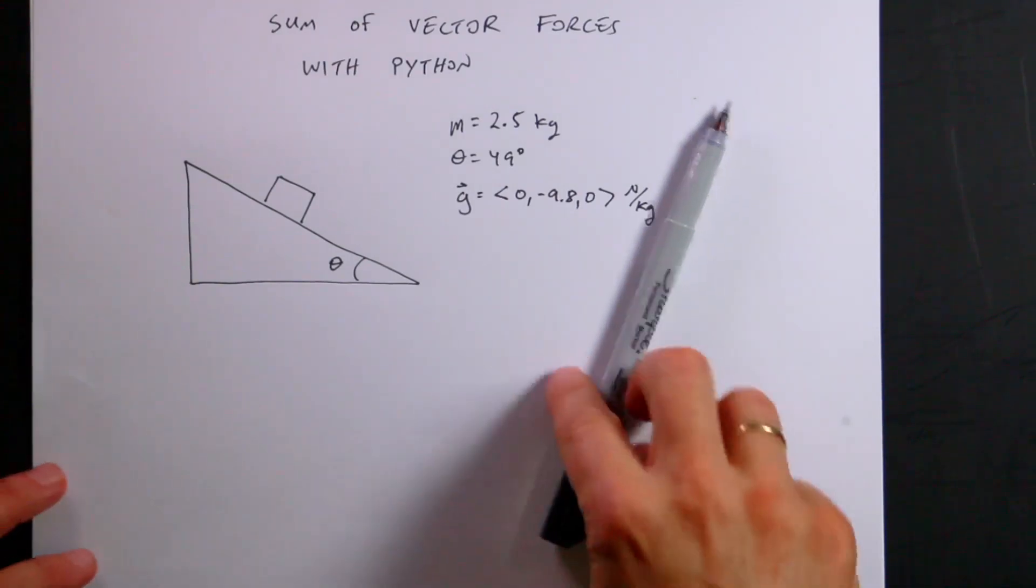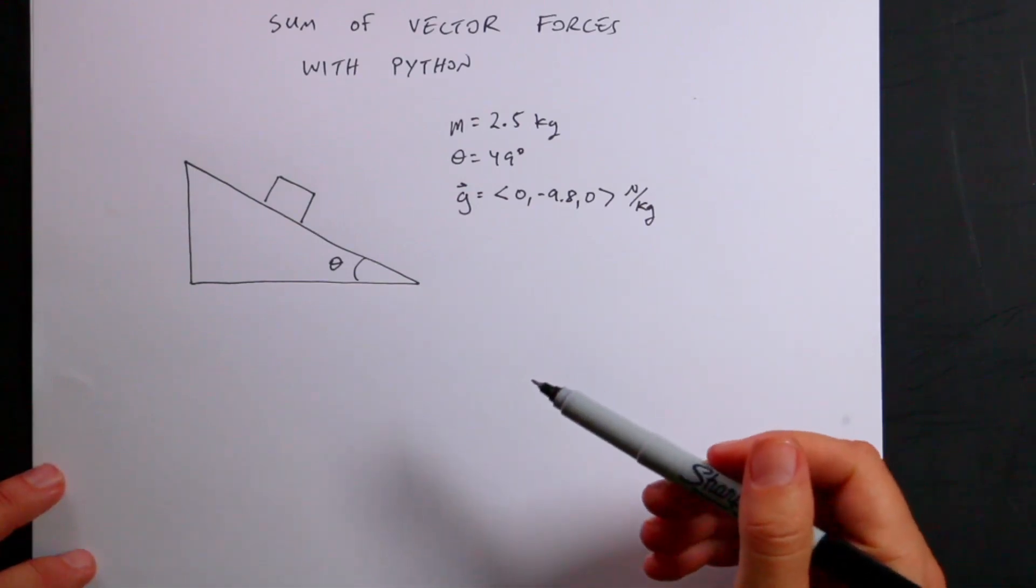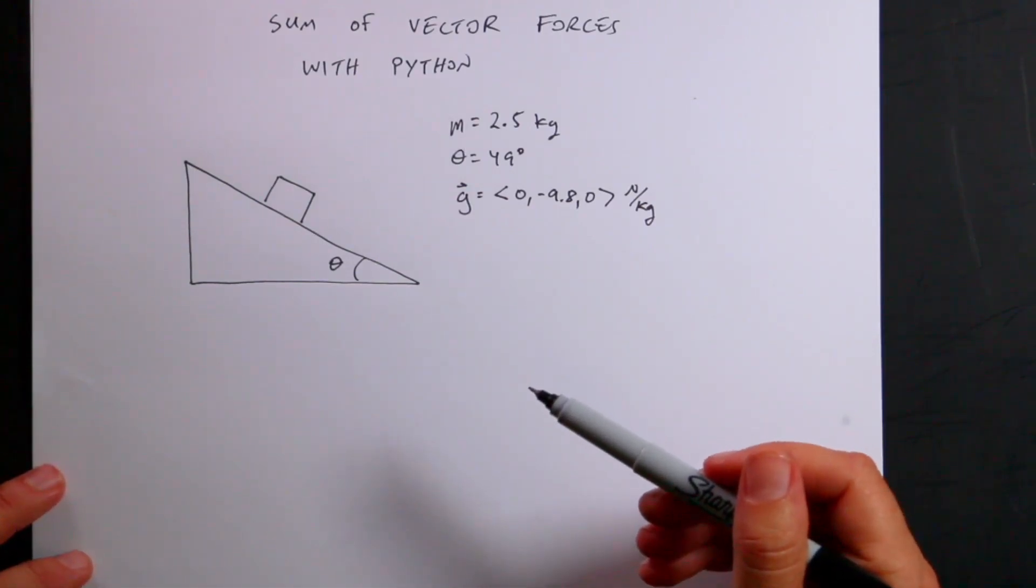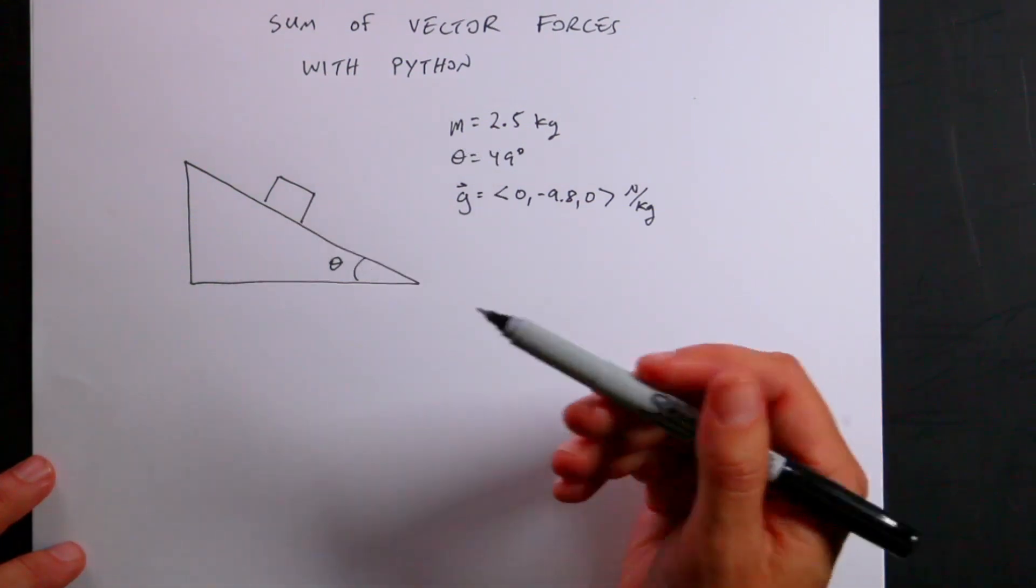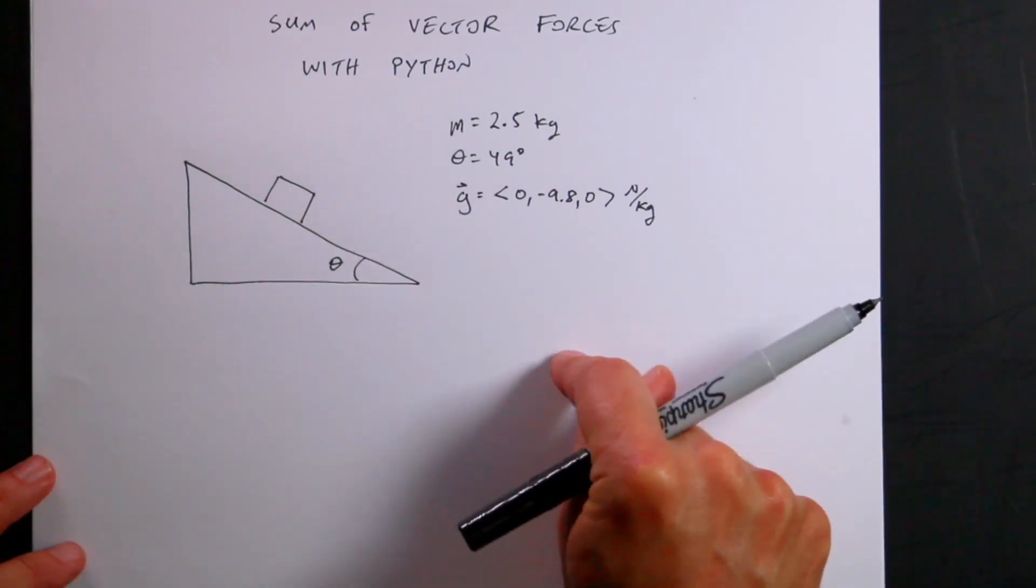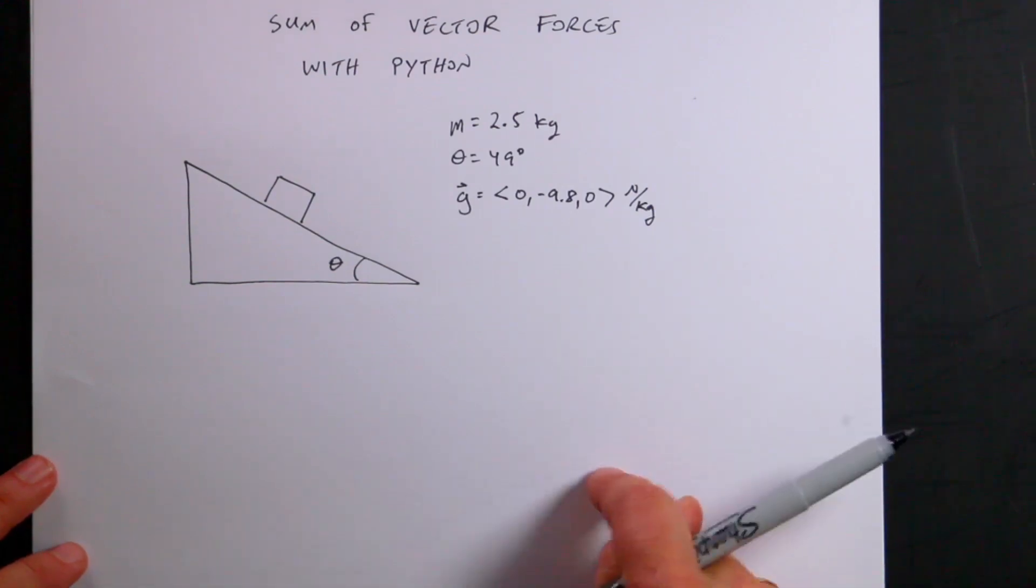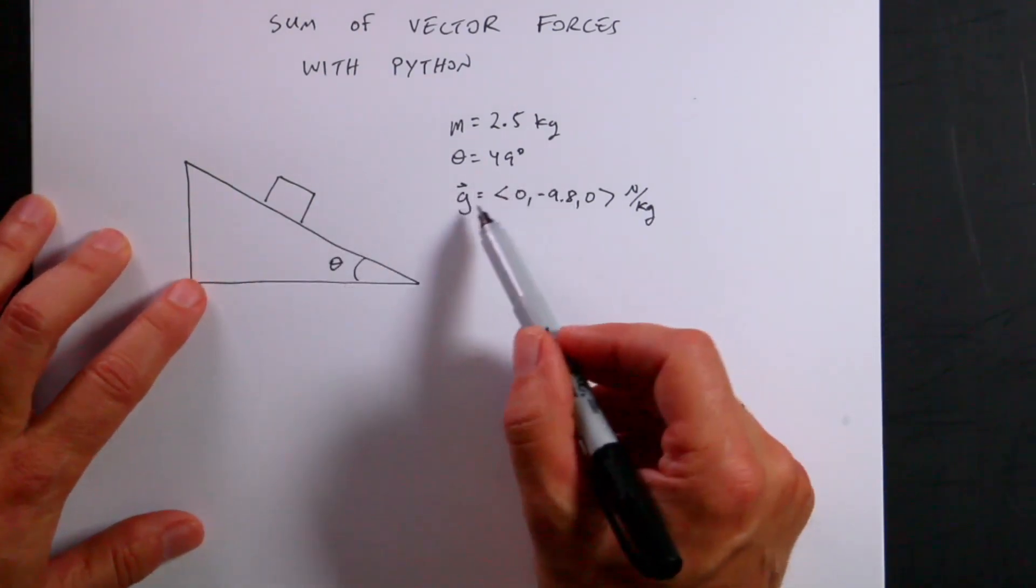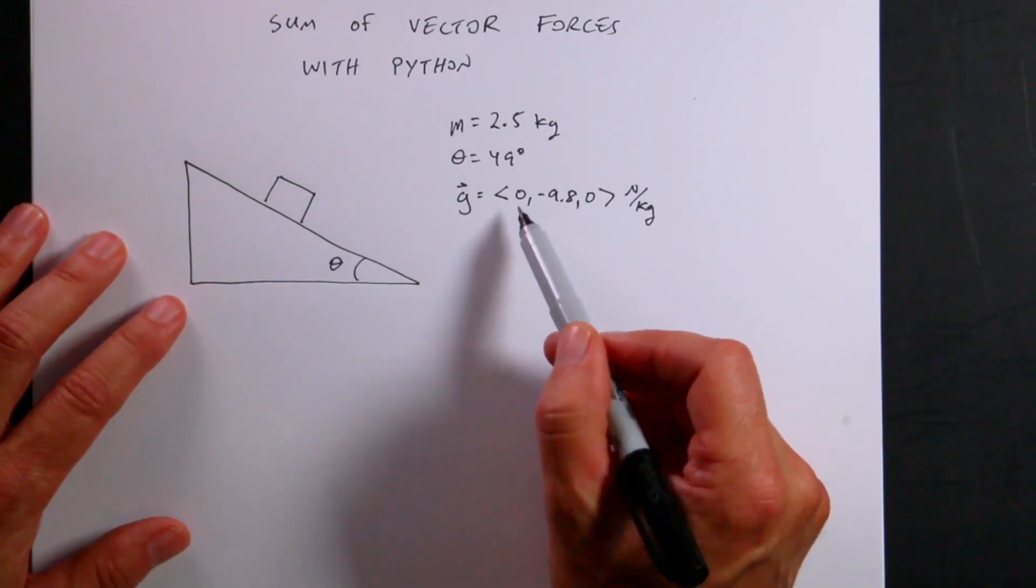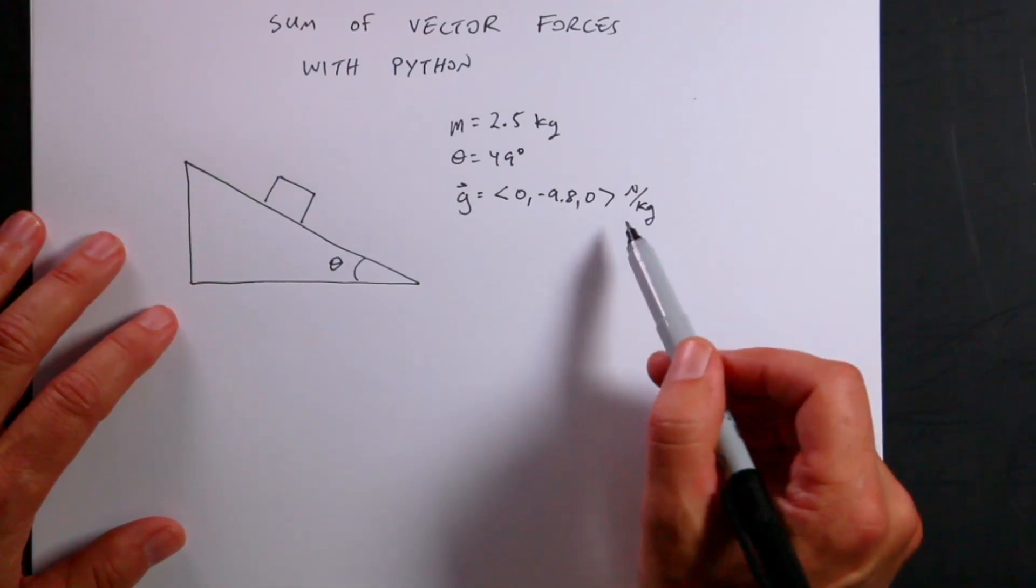Let's do some fun physics stuff. I want to do vector sum of forces and show you how to do this for this problem, a block on an inclined plane. And then we're going to do it in Python too, so I can show you the power of using Python as a calculator, especially as a vector calculator. Python's your friend. Python is good. So here's a block, mass m. The angle of this is 49 degrees. And there's my gravitational field. The vector is 0, negative 9.8, 0 Newtons per kilogram.